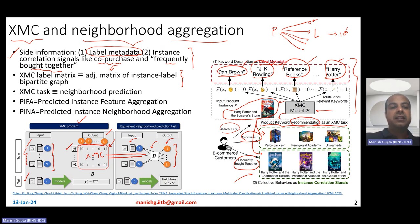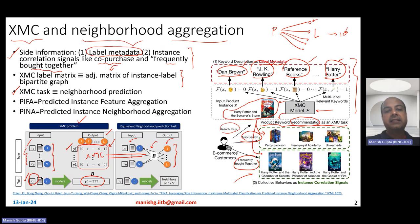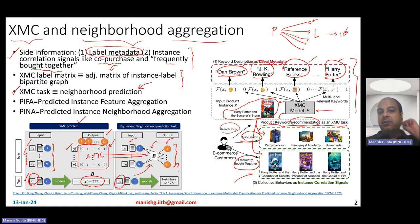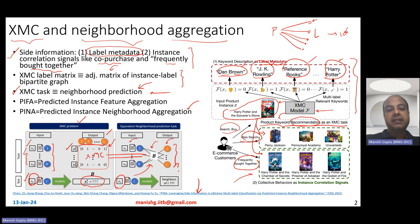So the XMC task — given a new test instance XT, what would be the label set Y — can be treated as a neighborhood prediction problem. If XT came as a new node in this bipartite graph, who would be its neighbors on the label side? This equivalence motivates the authors to think about PINA, Predicted Instance Neighborhood Aggregation. They basically say: if I have to predict the neighborhood, then why shouldn't I make use of neighborhood features while doing this prediction?